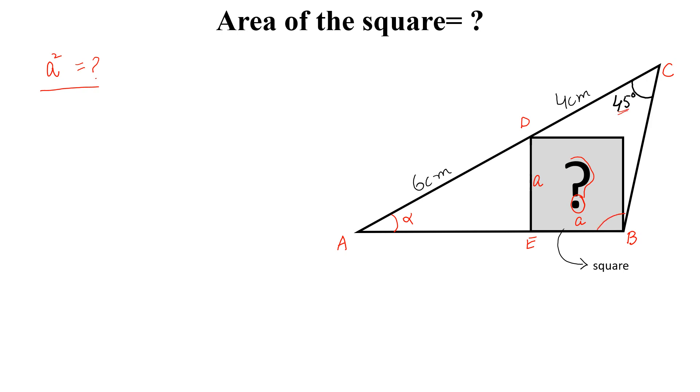So this angle will be equal to 180 minus 45 degrees minus alpha, so 135 degrees minus alpha. Now if we draw a line from D to D and this angle is alpha, this angle will be 45 degrees and this angle will be 135 degrees minus alpha.